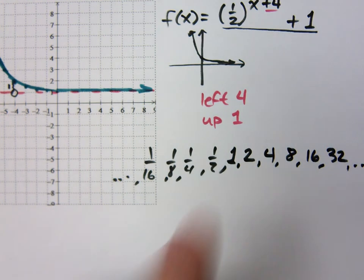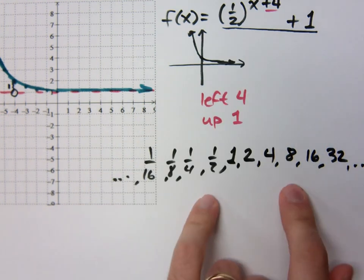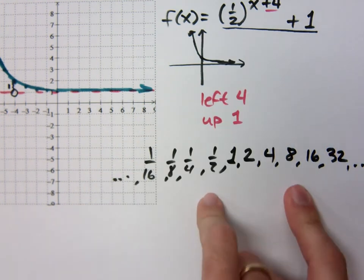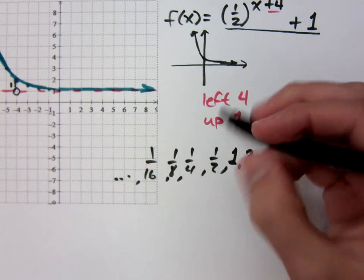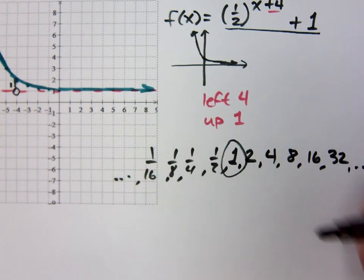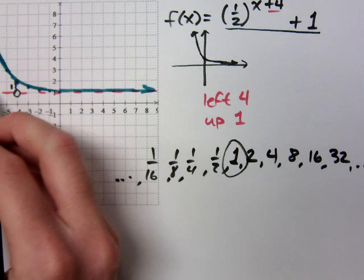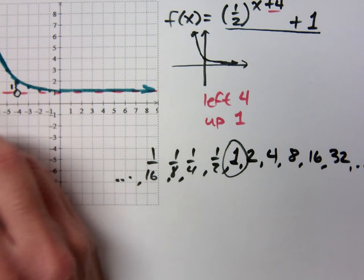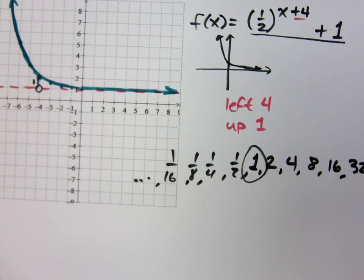Since this base was 1 half, all of these values kind of get flipped around that point. It's still going to be the same numbers, which represent the distance between the graph and that horizontal asymptote.